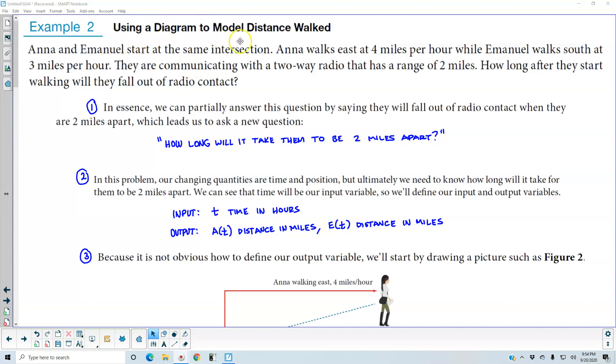Example 2: Using a Diagram to Model Distance Walked. Anna and Emanuel start at the same intersection. Anna walks east at 4 mph while Emanuel walks south at 3 mph. They are communicating with a two-way radio that has a range of 2 miles.